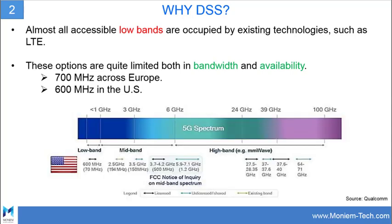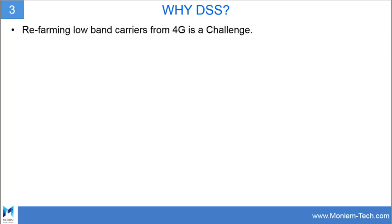However, despite the successful uptake of 5G, the industry expects most traffic in the upcoming years will still be carried by the 4G network until 5G device penetration exceeds that of LTE. The third reason is that refarming low-band carriers from 4G without a corresponding increase in 5G device penetration might lead to congestion on the refarmed LTE carriers.